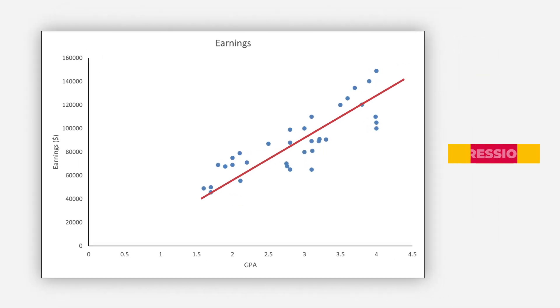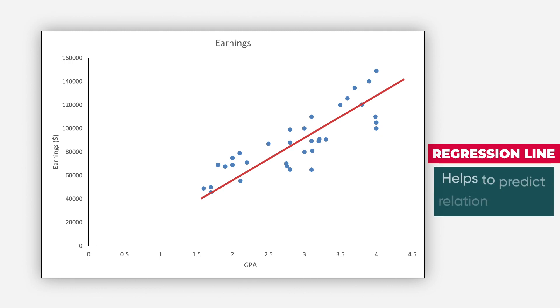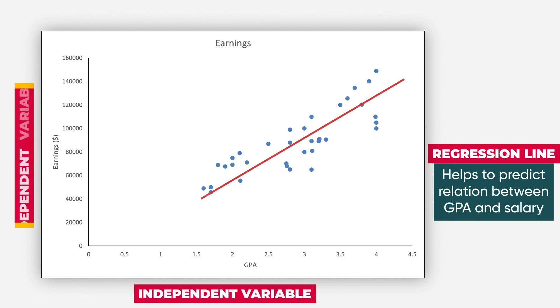The line you just drew is called the regression line. This regression line helps to predict the relationship between GPA and salary. In this case, GPA is an independent variable and salary is the dependent variable. So regression line shows the relationship between independent and dependent variable.